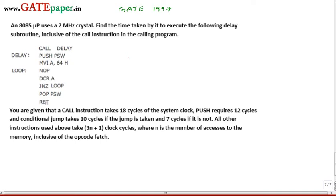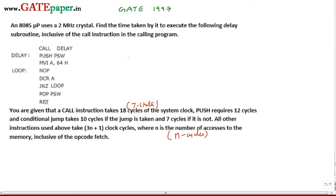All other instruction cycles depend on memory accesses. Here, n is nothing but the number of accesses to memory, which equals the number of machine cycles for that instruction. Cycles here means T-states: CALL takes 18 T-states, PUSH takes 12 T-states, and the conditional jump takes 10 T-states if the jump executes, otherwise 7 T-states.